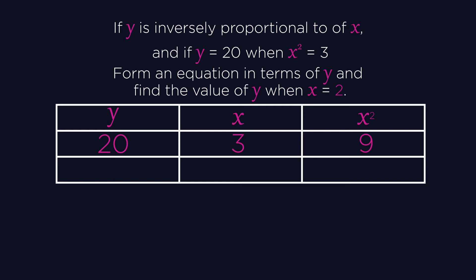k is again the product of x squared and y. So x squared times y equals 180. So y equals 180 over x squared in terms of y.